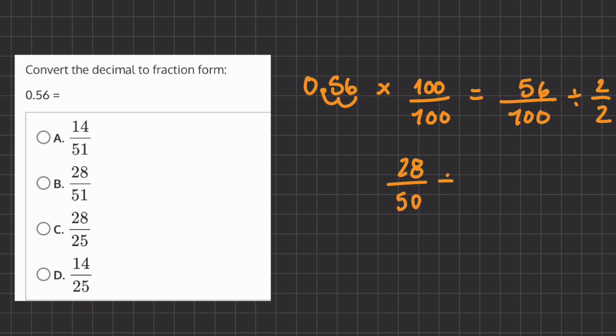And still even numbers, let's continue with dividing by 2. So 28 divided by 2 is 14, and 50 divided by 2 is 25. Because we can no longer simplify this fraction, 14 over 25 will be our final answer.